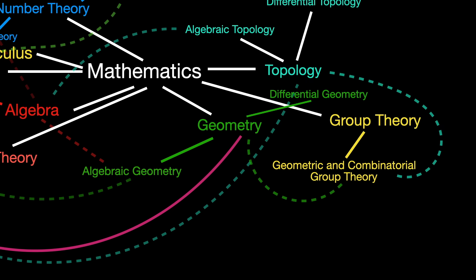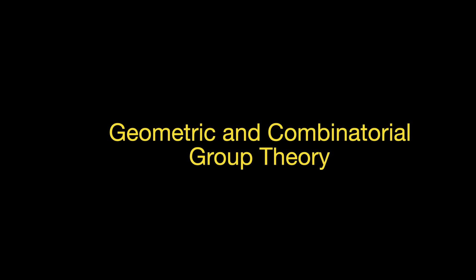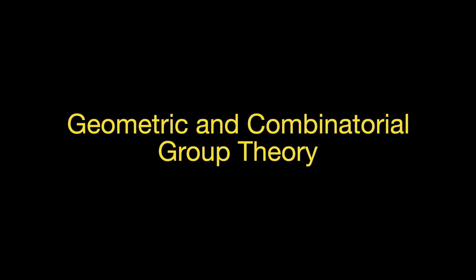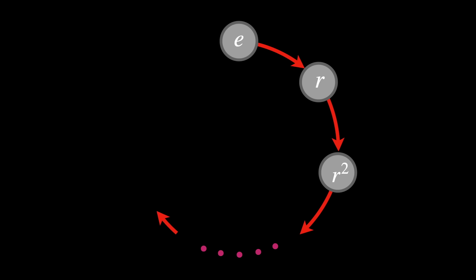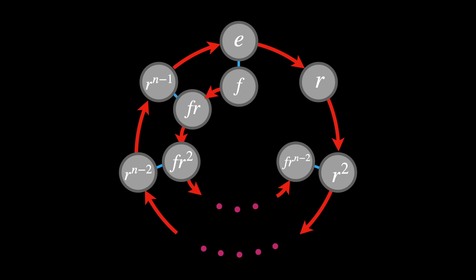Geometric and combinatorial group theory. This branch is split into two main subfields: geometric group theory and combinatorial group theory. Geometric group theory focuses on the relationships between groups and geometric or topological structures, often studying groups through their actions on various spaces. It aims to develop insights that benefit both the study of geometry or topology and group theory itself.